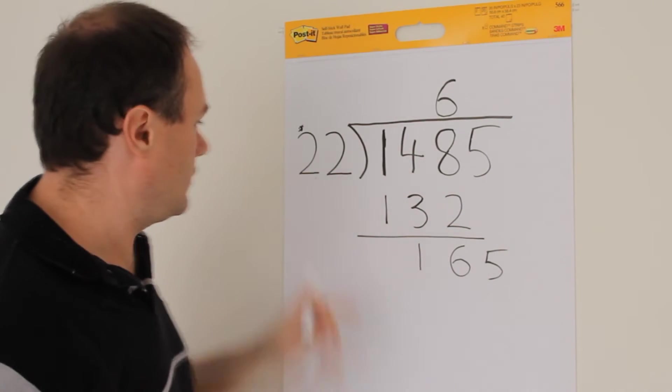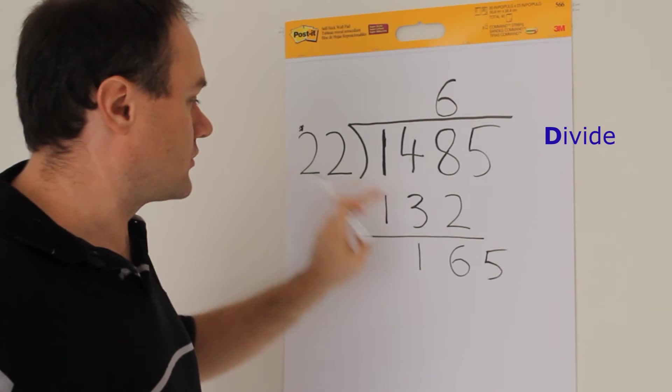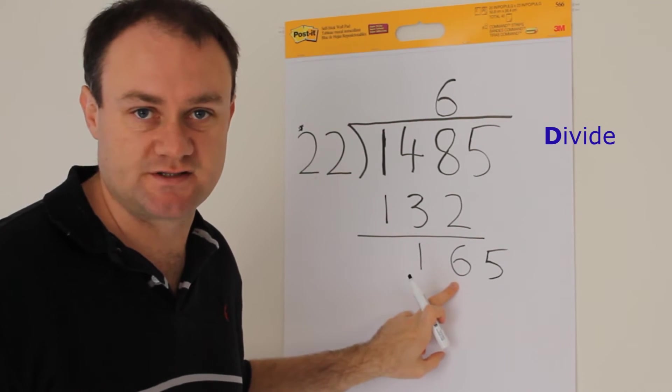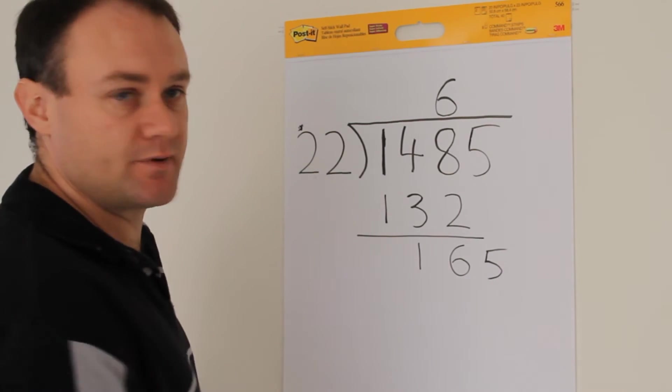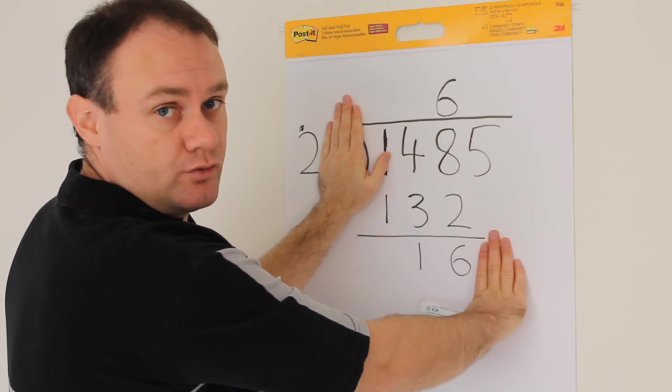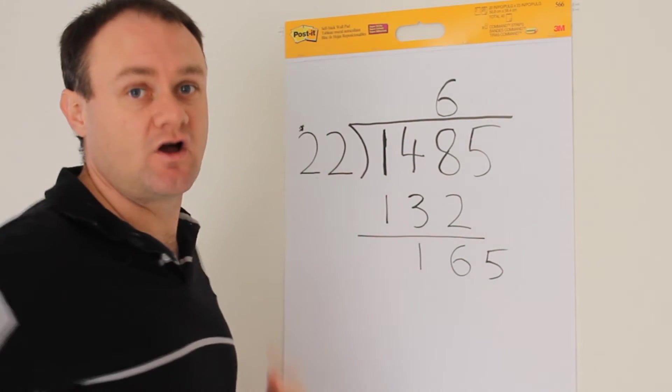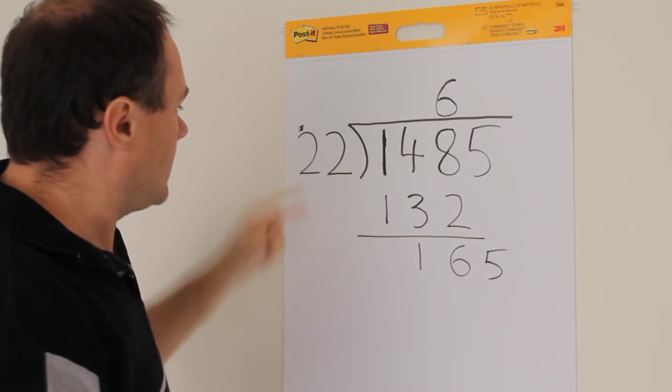More fun is in store because we now have to ask, how many times does 22 go into 165? Pretty similar to the last one. I could cover up each number at the end, and I'm now left with: how many times does 2 go into 16 as a kind of a guide? And the answer to that is 8.